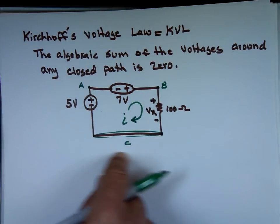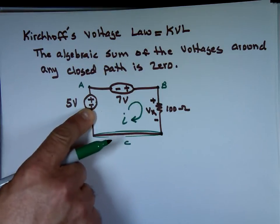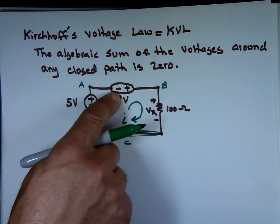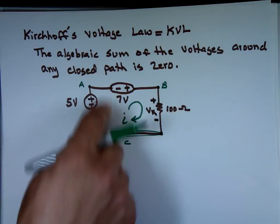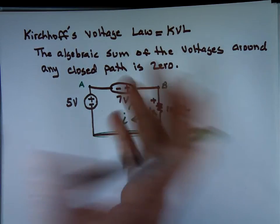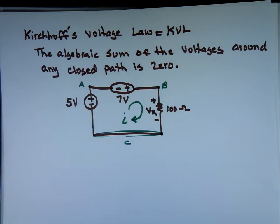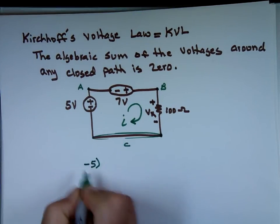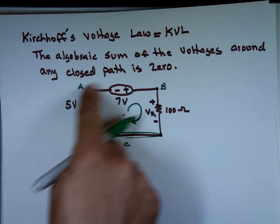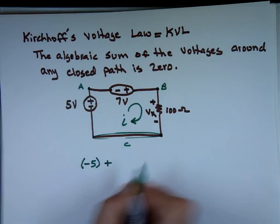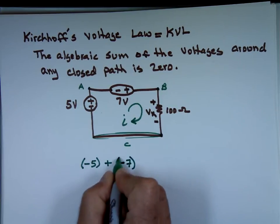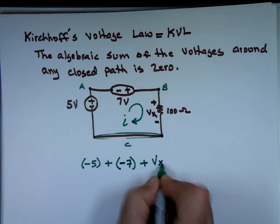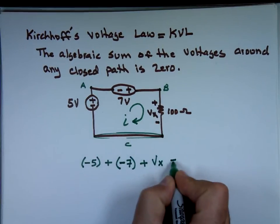As you travel through that loop, you're entering the 5-volt source from which end? Minus on the bottom, plus on the top — you're entering from the minus. So that's negative 5. Keep going — entering the 7-volt source from the minus, so that's negative 7. Keep going — entering the resistor from the plus, so that's plus Vx. Any more voltages? No. That has to equal zero.